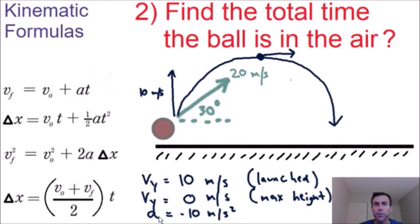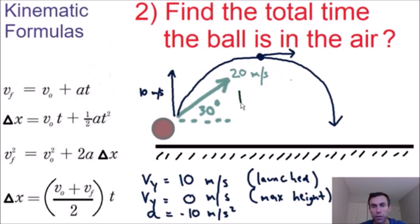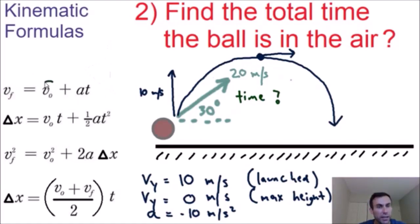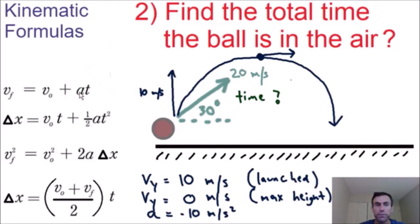We're trying to find the total time the ball is in the air, so we're solving for time. We're going to use the first kinematic formula because we have a final velocity at max height, an initial velocity at launch, and the acceleration due to gravity. We'll rearrange that formula and solve for t.